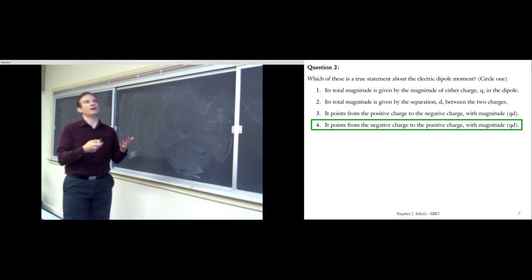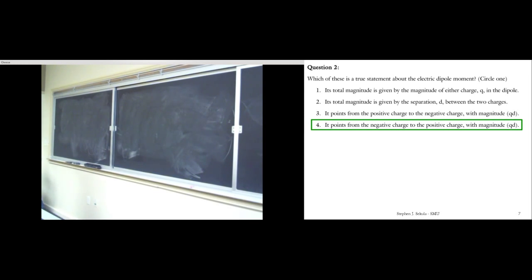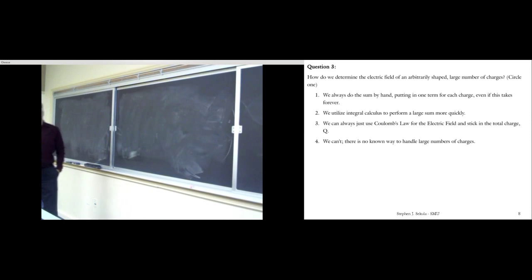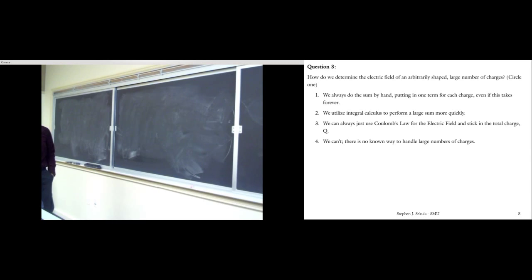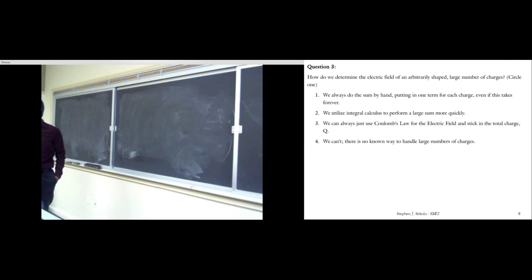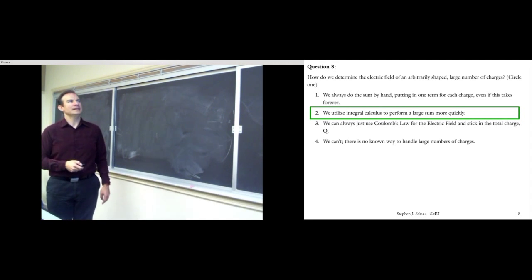Question two: which is a true statement about the electric dipole moment? It points from the negative charge to the positive charge with magnitude q times d. That's number four — it falls out of the derivation, but the convention is that the dipole moment starts on the negative and goes to the positive. That p-vector equals q times d-vector, where d points from the negative charge to the positive charge. Question three: to determine the electric field of an arbitrarily shaped distribution, we utilize integral calculus to perform a large sum more quickly.